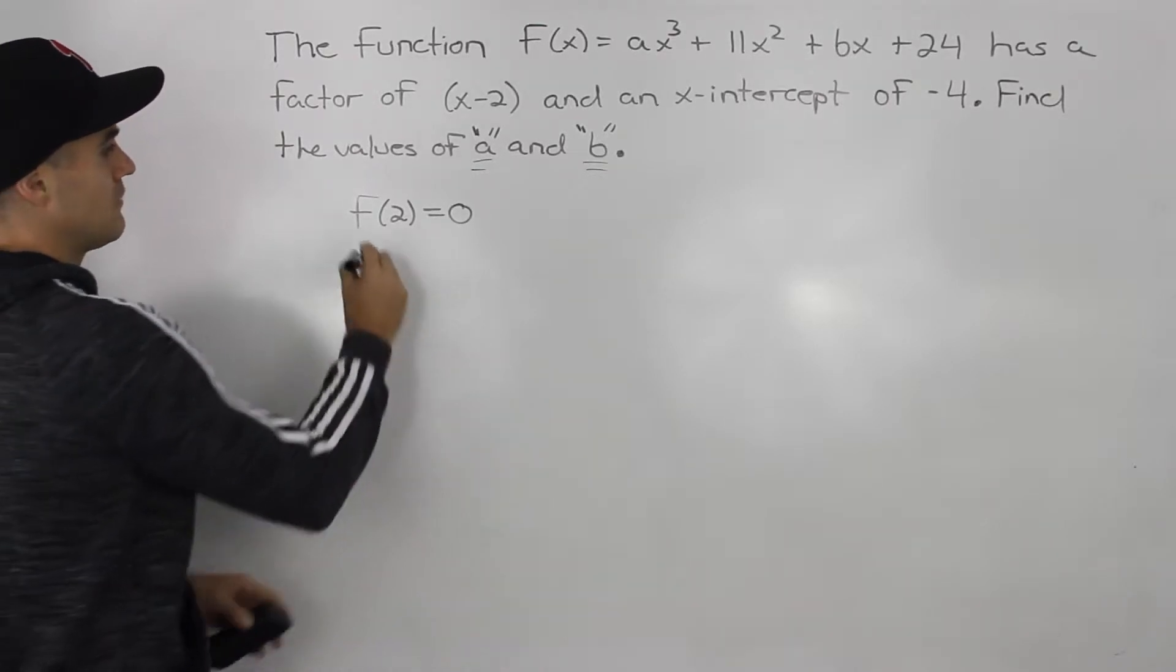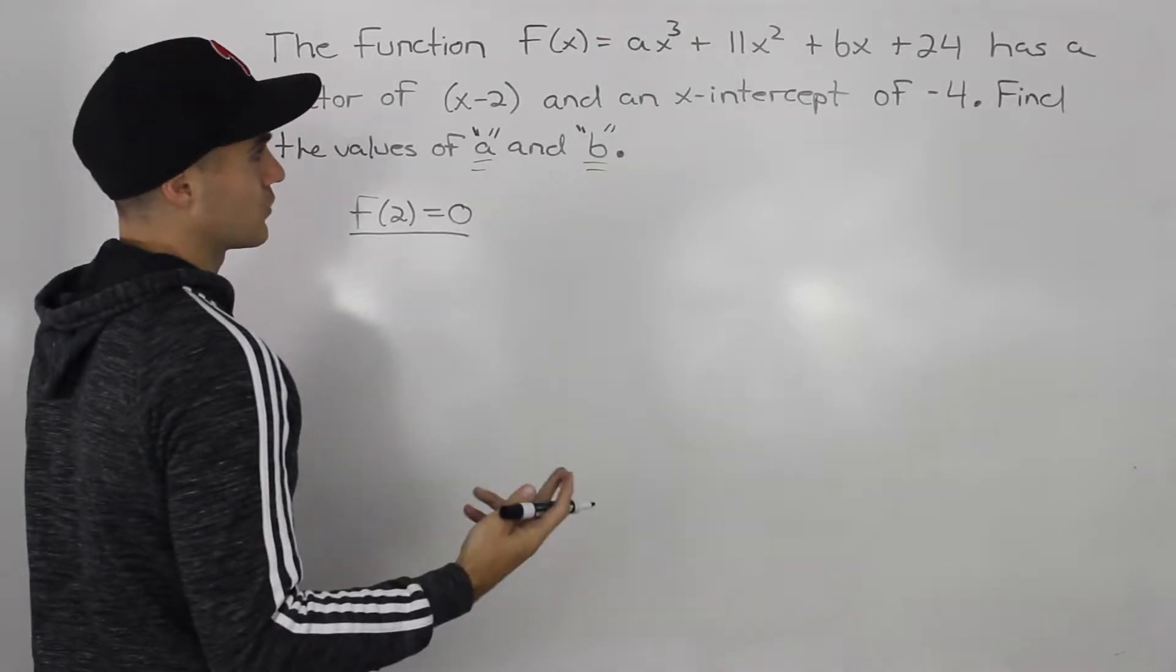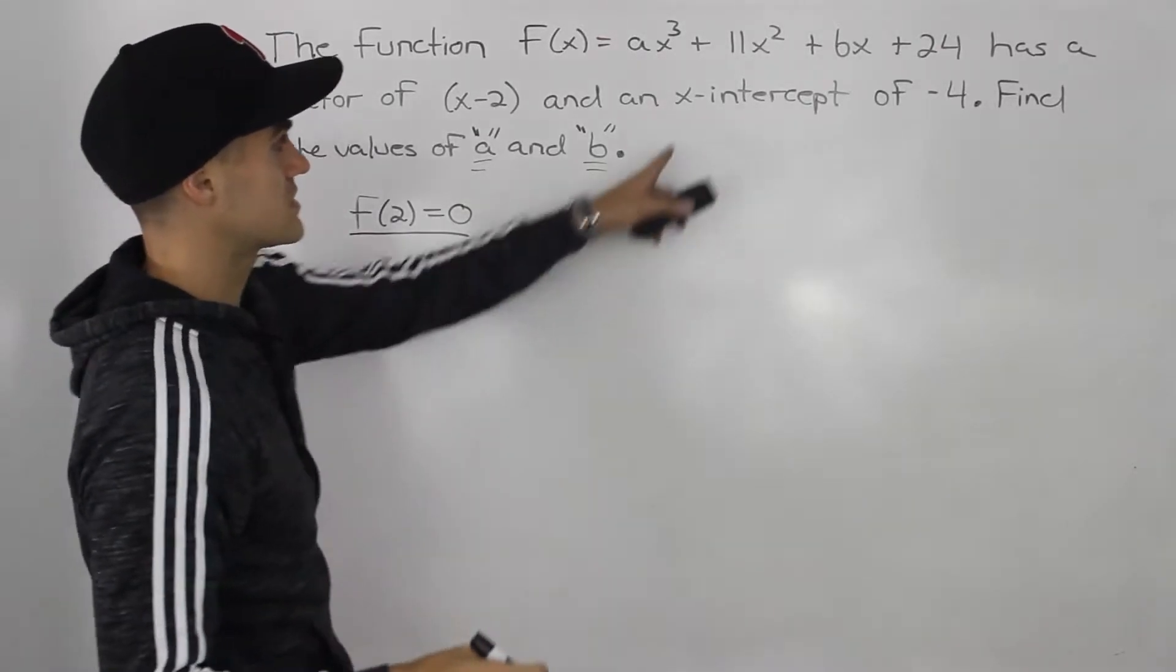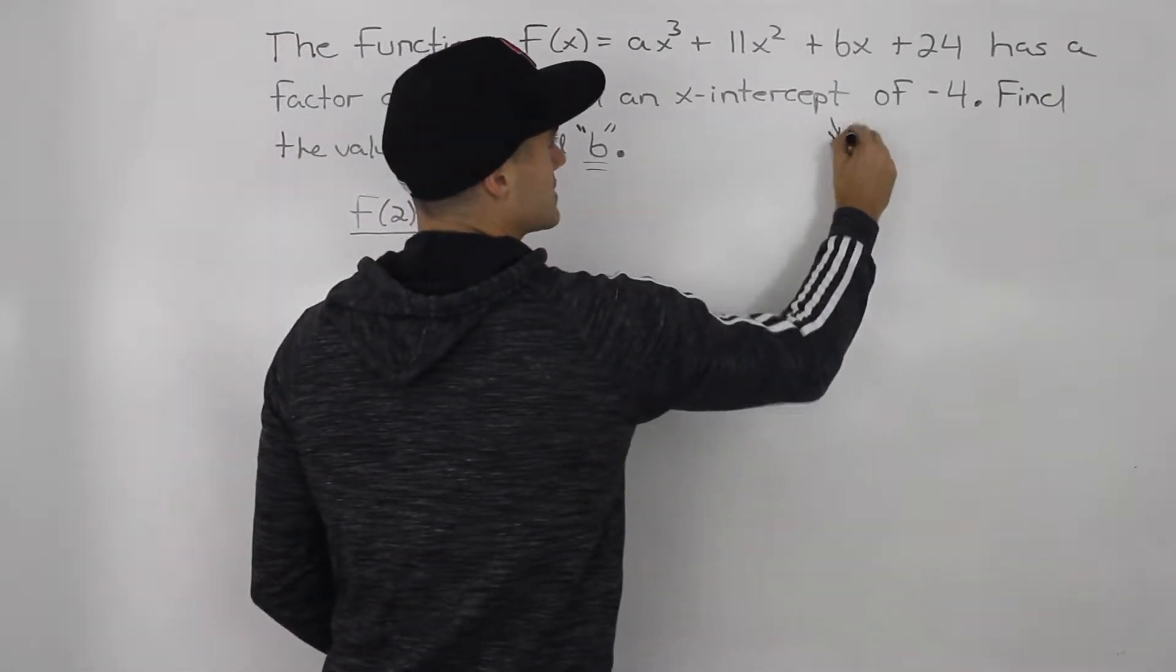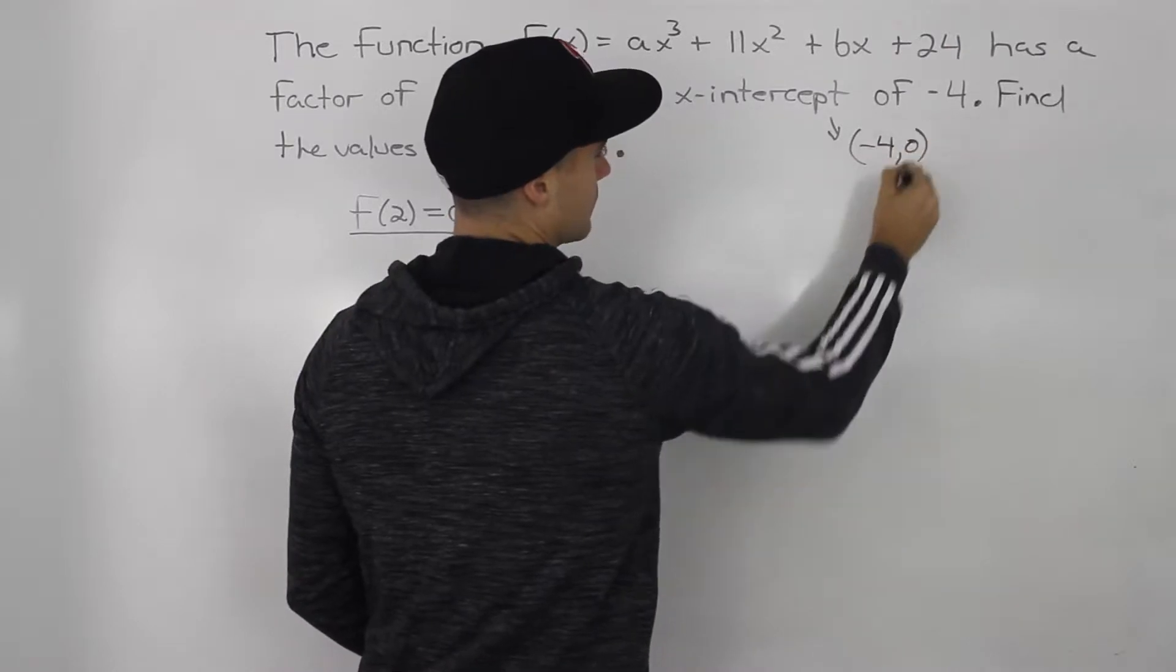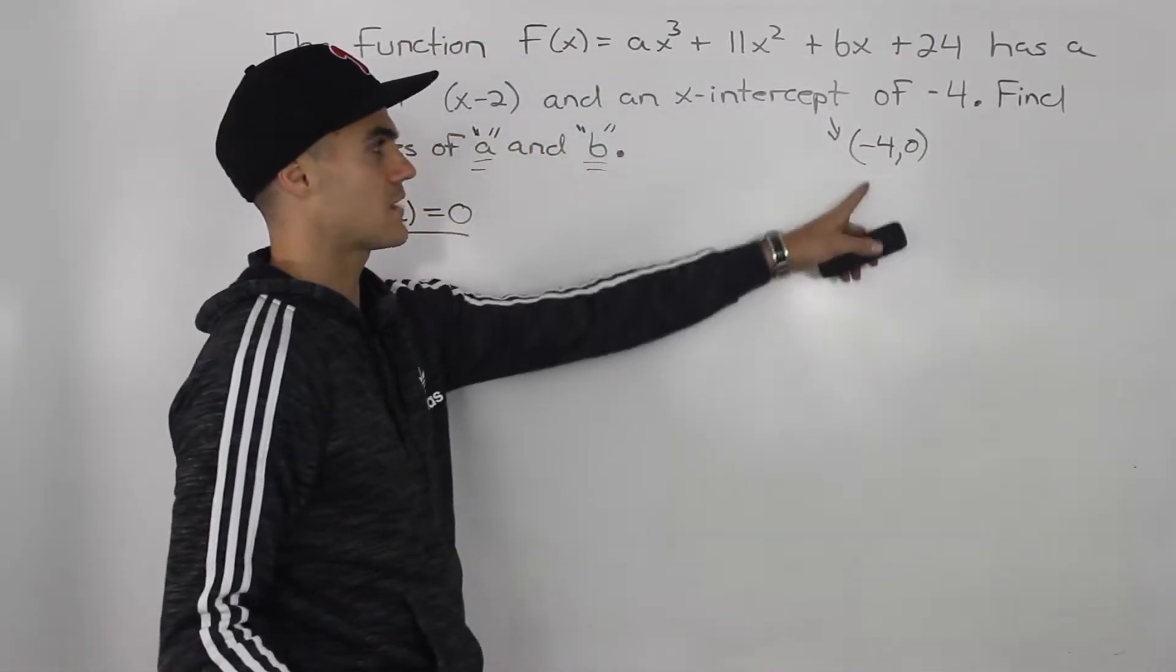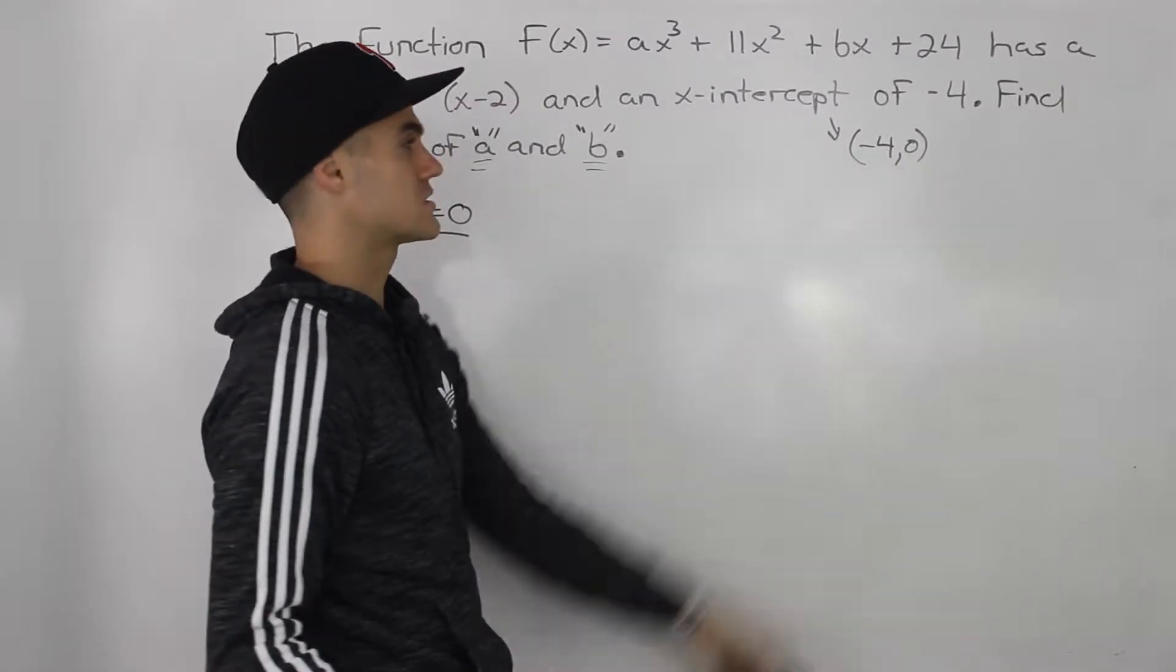All right, so that will be one equation that we can work with. What about the other equation? We need two equations. So this x-intercept of negative 4, what that means is that this function is going to have a coordinate negative 4 and 0, right? An x-intercept, at an x value negative 4, the y value is going to be 0.